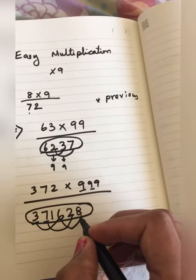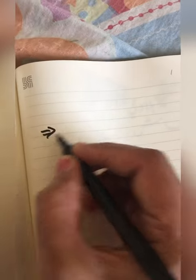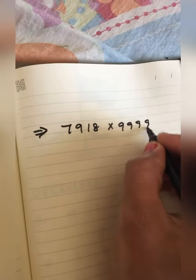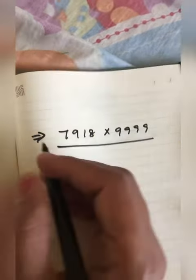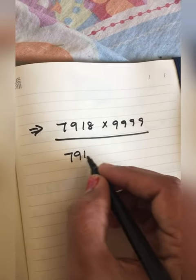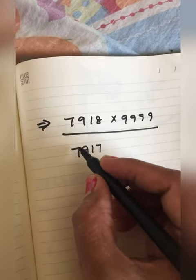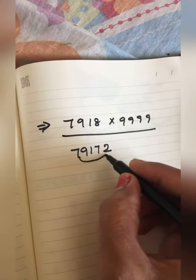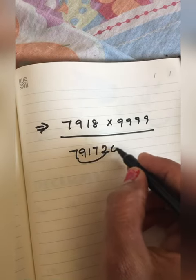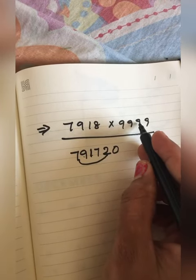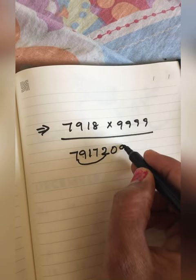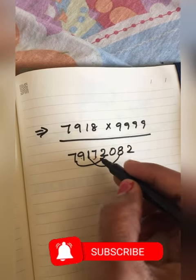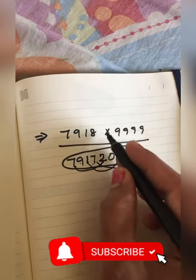Let's do it for a 4-digit number. Same method: first write the previous number, then do the subtraction. For each digit, find what is needed to make 9: 7 needs 2, 9 needs 0, 1 needs 8, 7 needs 2. So this is the answer for this sum.